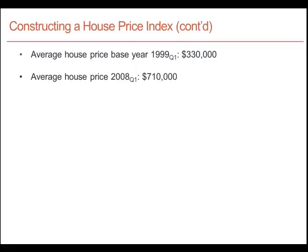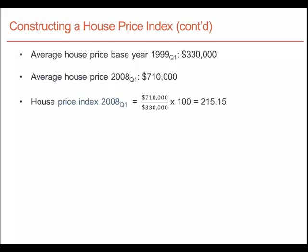Let's take the year 2008 — we are dealing with first-quarter values in every case. To construct a price index value for 2008 with 1999 as the base year, we simply take the value in 2008 divided by the value in the base year and multiply by 100, giving us a value of 215.15. This tells us that if the price index is set at 100 in 1999, by 2008 prices had gone up by 115.15%.